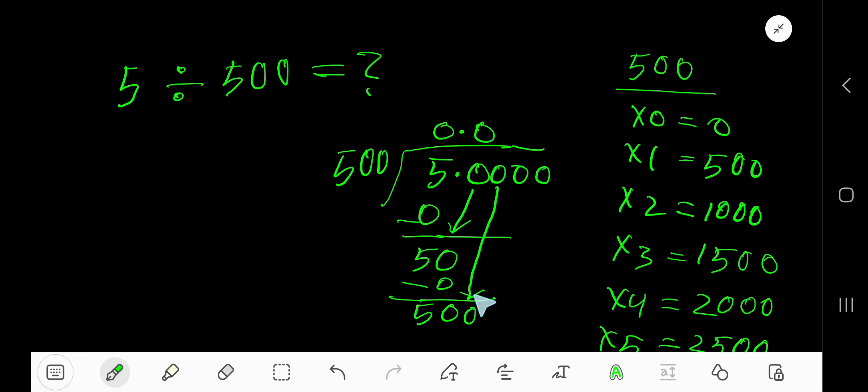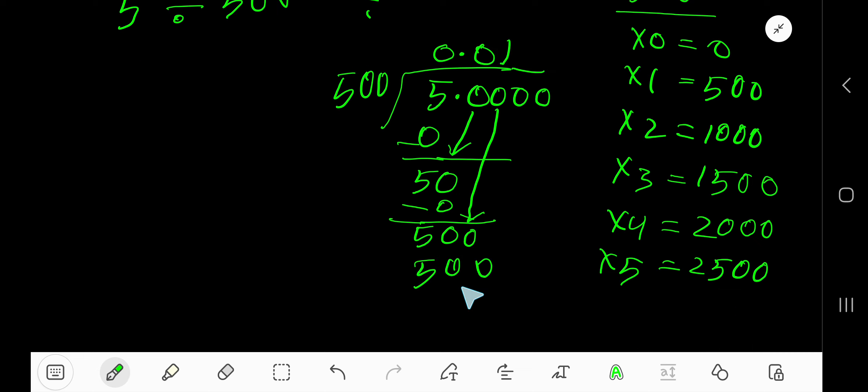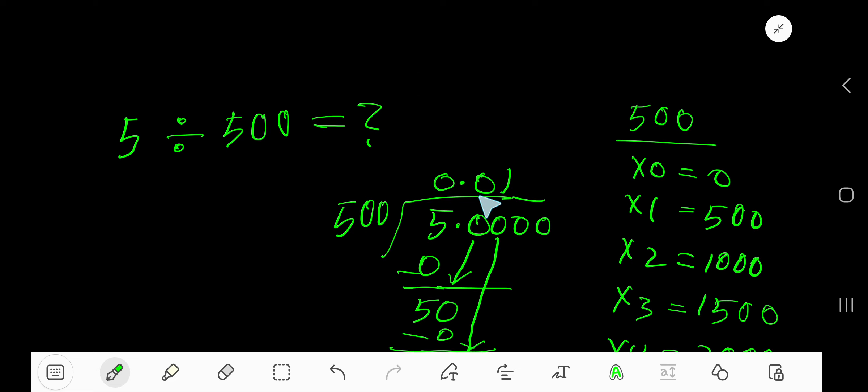500 goes into 500 how many times? 500 goes into 500 one time. 1 times 500 is 500. Subtract, you are getting zero. As your remainder is zero, we are done. So 0.01 is our answer.